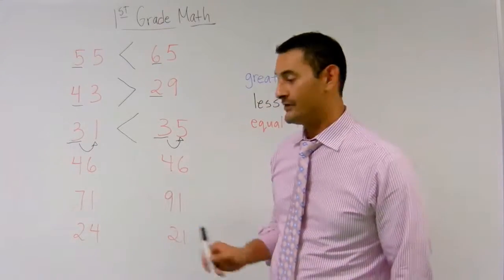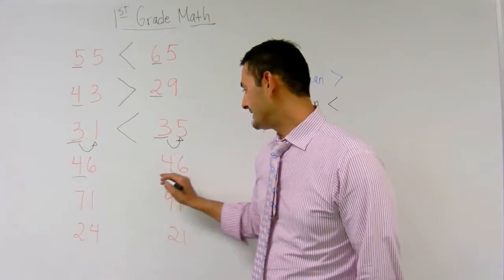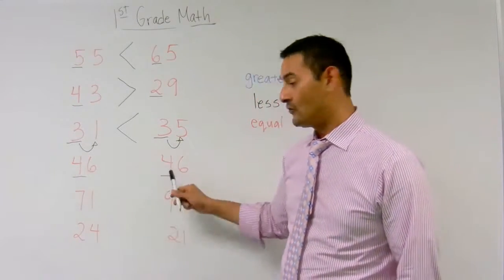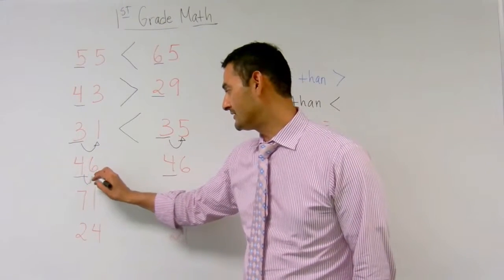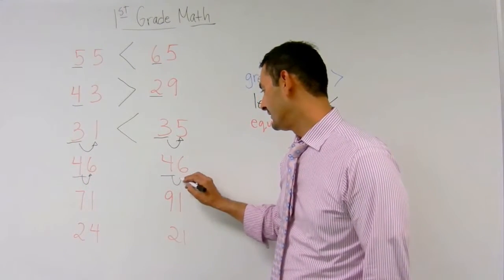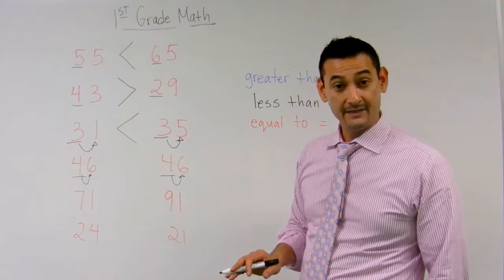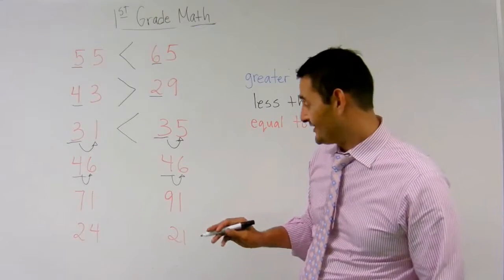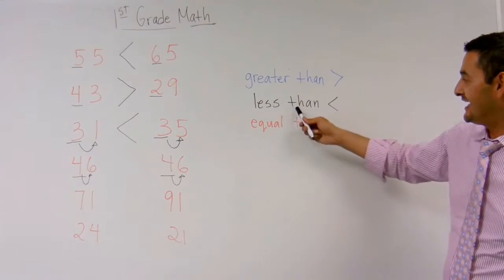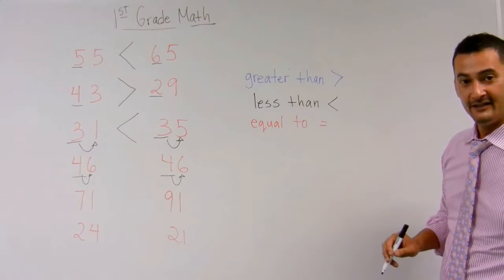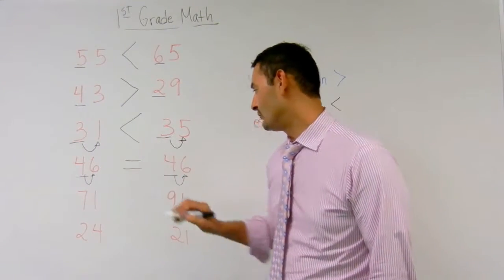Now, let's take a look at this number here. 46 and 46. We start with the tenths place, 4 and 4. Those are the same, right? So, what do I do? Go on to the next digit, the ones place. Here, I have a 6 and a 6. Are they the same? They are, right? So, in this case, what would I use? Greater than, less than, or equal to. That's absolutely correct. I'm going to use equals. Equal to.